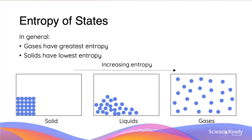The unit we use to measure entropy is joules per kelvin per mole. In general, gases are going to have the greatest entropy, because as we can see in this diagram representing the particle theory of substances, gases have the ability to continually move around randomly. Liquids are more confined, so they are less chaotic, and solids are even more confined, so they have the least entropy.